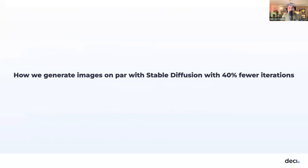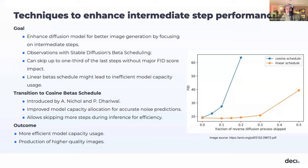Next: how we generate images on par with Stable Diffusion but with 40% fewer iterations. Our model was trained to be sample-efficient — producing high-quality results using fewer diffusion time steps during inference. We did this by combining a few techniques, including cosine beta schedules. With Stable Diffusion 1.5's linear beta scheduling, we found we could skip one-third of the final steps without a major drop in FID score — indicating the linear beta schedule might not be making the best use of the model's learning potential, essentially turning random noise into different random noise.